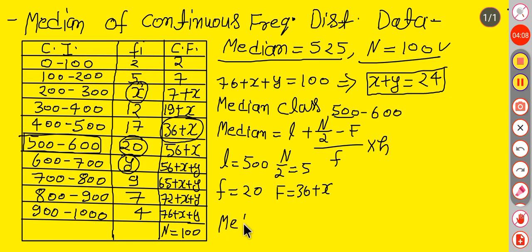So median equals 500 plus, here it would be 50 minus 36 plus x, upon 20, into 100, because h is 100.